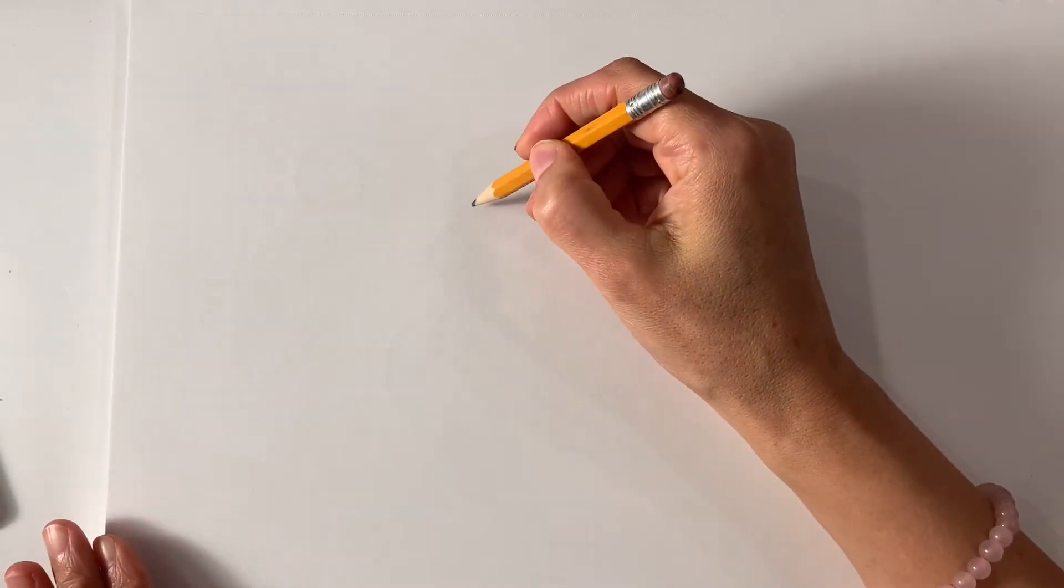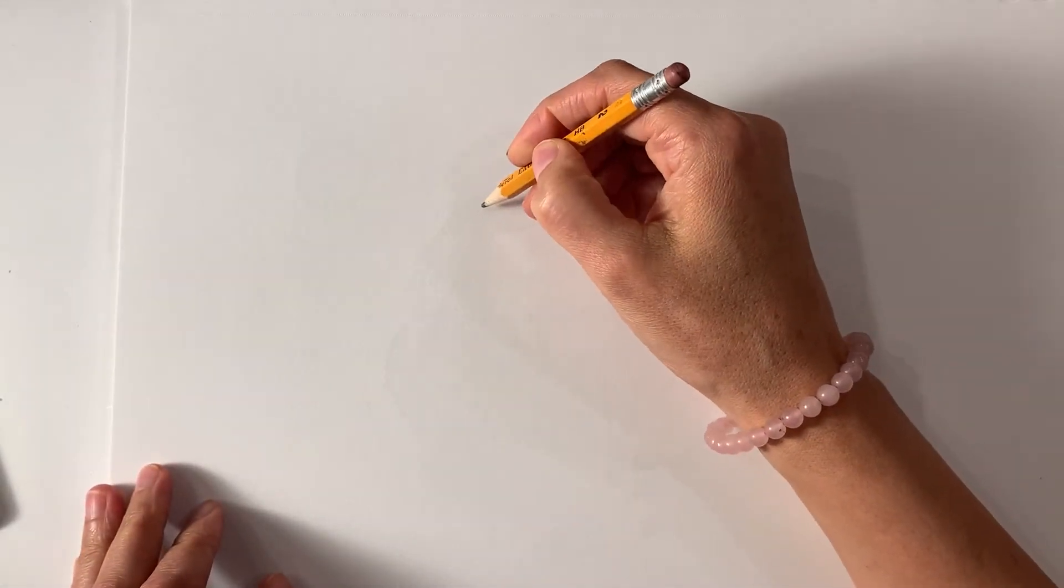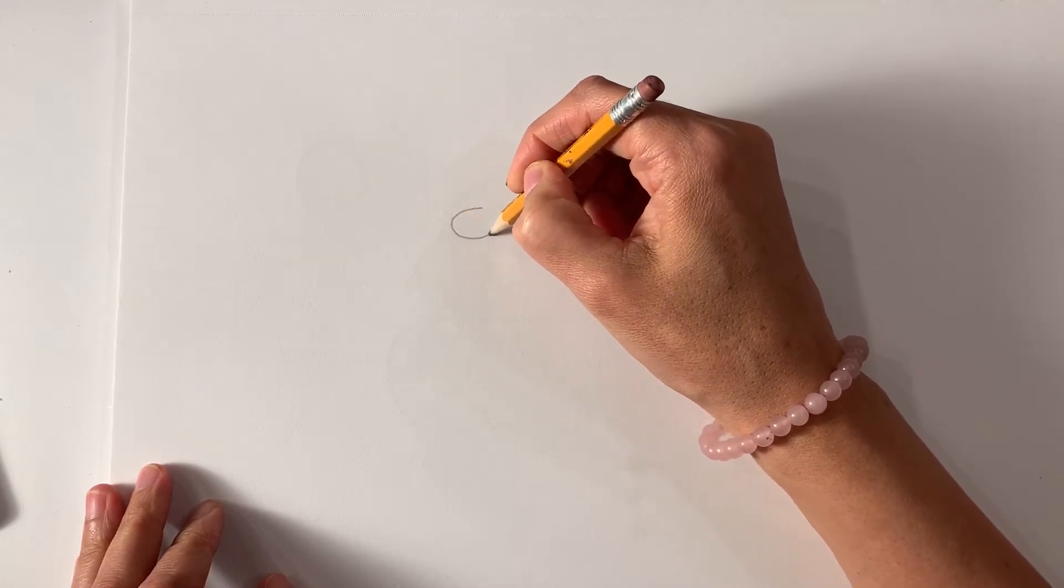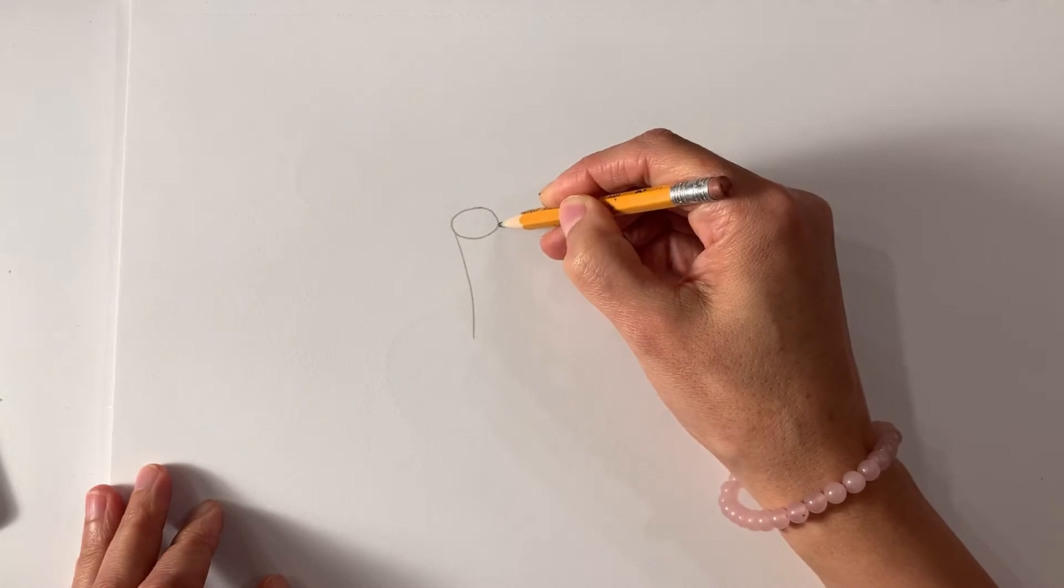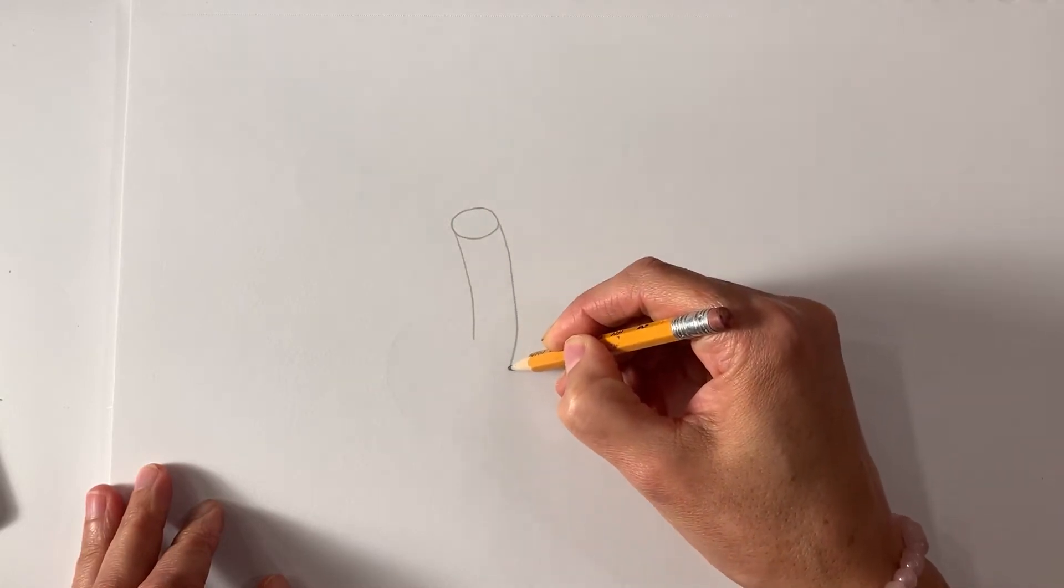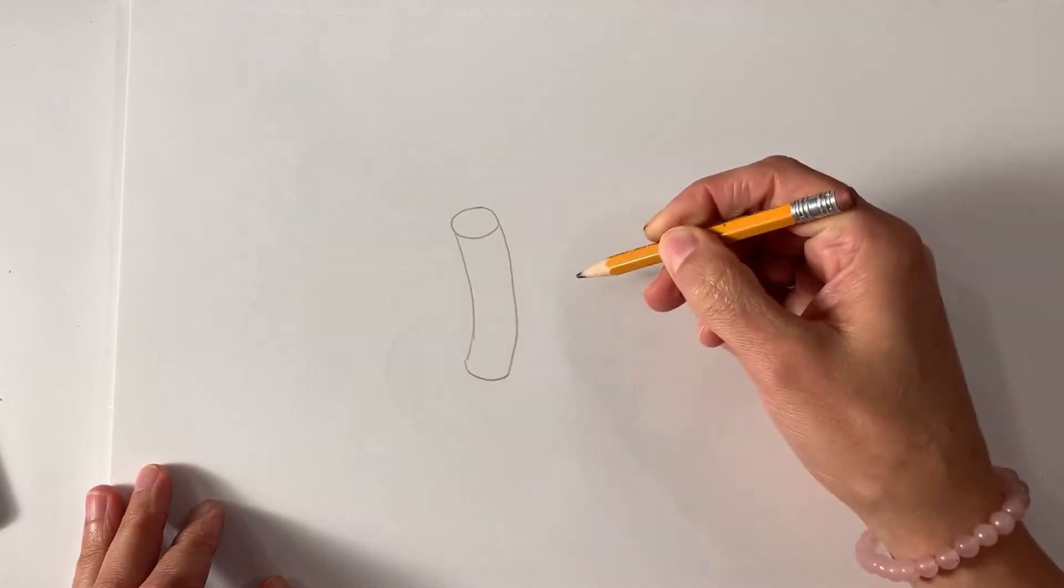We are going to use cylinders for a doodle three-dimensional design. For this project you're just going to start with simple cylinders and make them appear three-dimensional.